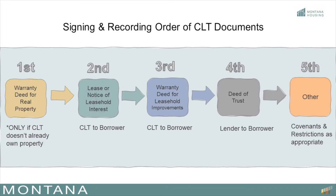The order of the documents recorded is extremely important. Without the documents being recorded in the correct order, in the event of a foreclosure, Montana Housing may not have the correct priority for a trustee sale and be forced to do a judicial foreclosure. While the title company ensures Montana Housing's lien in the first position, the title company might argue if they showed the documents in Schedule B that they are not liable for the error. First, the warranty deed for real property should be recorded prior to any other document to establish the right for the CLT to give a lease on the real property and sell the fee simple interest in the improvements.